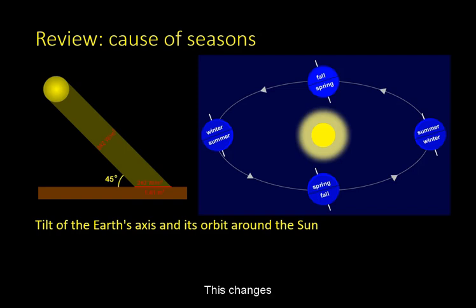This changes both solar elevation and number of daylight hours. Because the Earth is spherical, this causes the Seasons to be opposite in the two hemispheres.